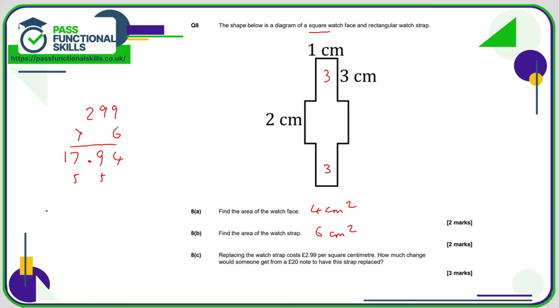So if you pay with £20, what change do you get? Well, let's work our way up from 17.94 to 20. So that's 6p will take us to £18. And then another £2 will take us to £20. So £2 and 6p.